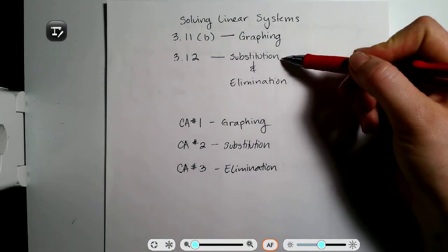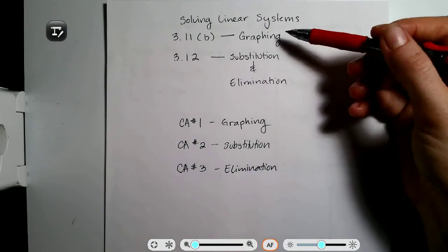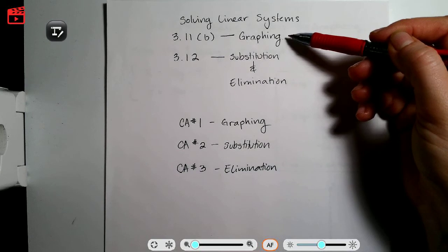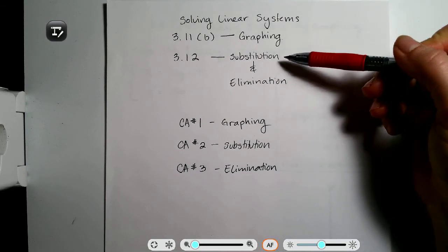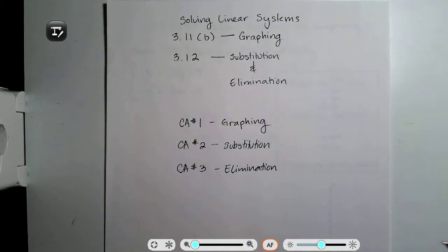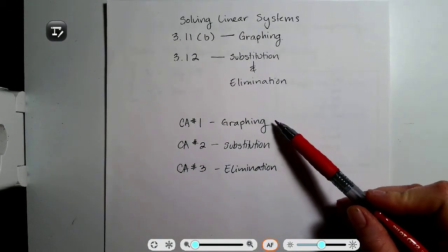The methods are graphing, substitution, and elimination. We've already gone over graphing, so I'm going to do one more example, and then we'll go into working on substitution and elimination. I'm going to split this into three separate